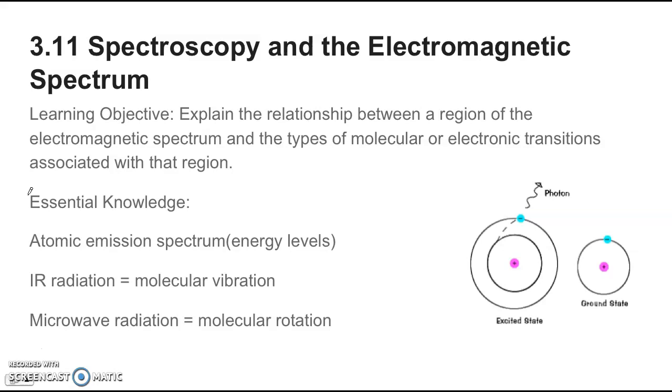3.11 is on spectroscopy and the electromagnetic spectrum. The learning objective is explaining the relationship between a region of the EM spectrum and the types of molecular or electronic transitions associated with that region.